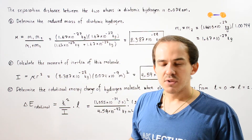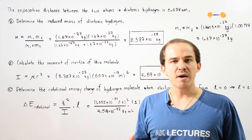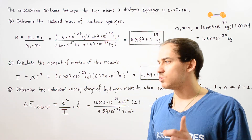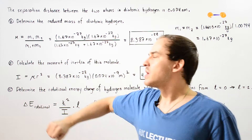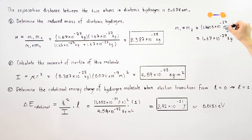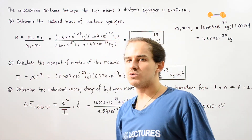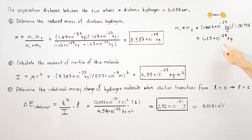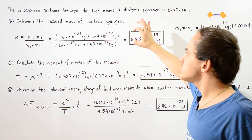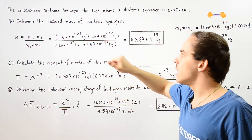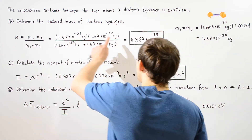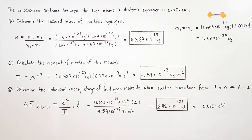In part A, we want to calculate the reduced mass of our diatomic hydrogen molecule. Recall from our discussion on the moment of inertia of diatomic molecules that the reduced mass mu equals the product of the two atomic masses divided by their sum. So we take 1.67 times 10 to the negative 27 kilograms multiplied by itself, divided by the sum of those two values. Our reduced mass mu is equal to 8.387 times 10 to the negative 27 kilograms.